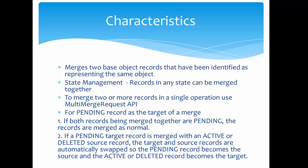Regarding state management — if the base object is enabled for state management, records in any state can be merged together, such as active with pending, or deleted with active. The result will vary. To merge two or more records in a single operation, use the MultiMergeRequest API. Using the Merge API, you can only merge one record at a time; if the business requirement is to merge multiple records, use the MultiMergeRequest API.